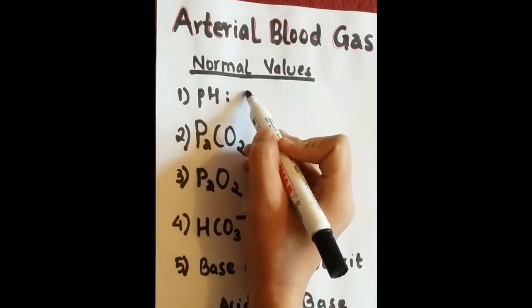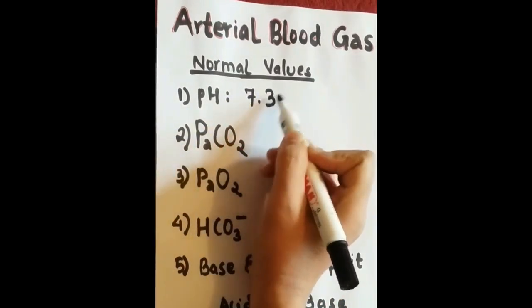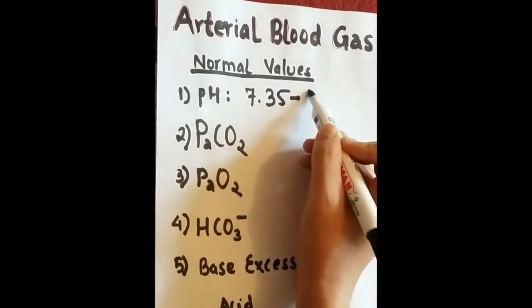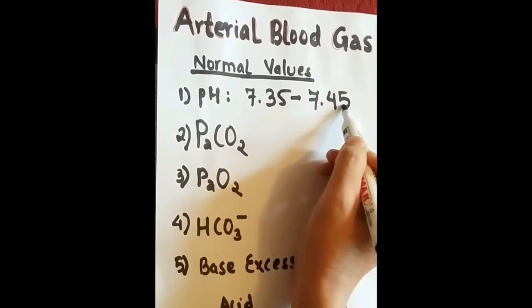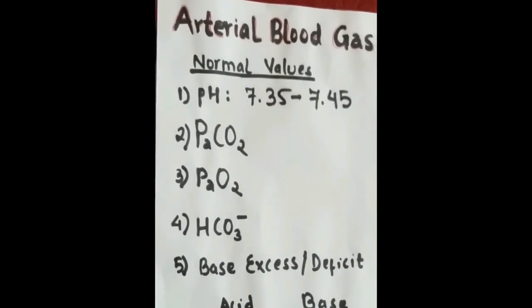Now, let's learn about the normal values of this parameter. First is pH. The pH's normal range is 7.35 to 7.45.